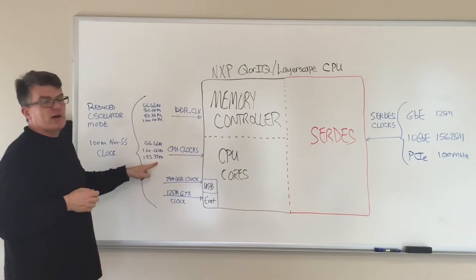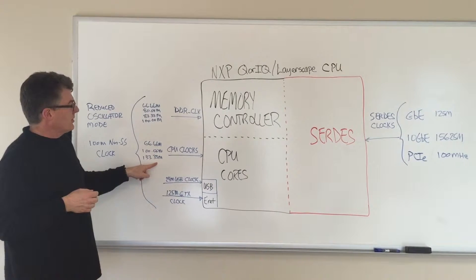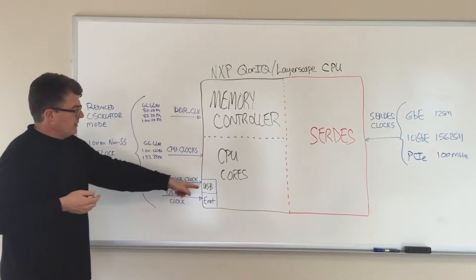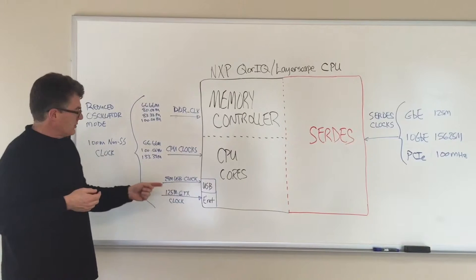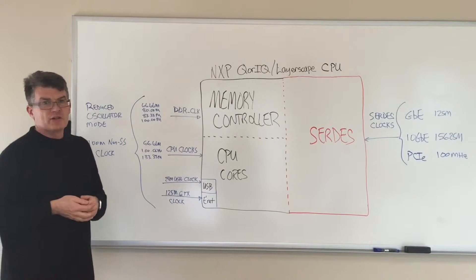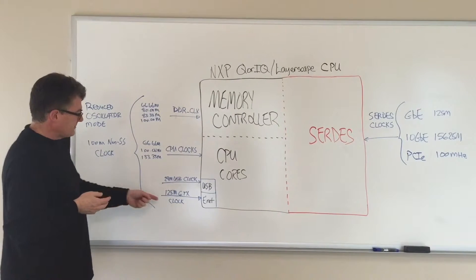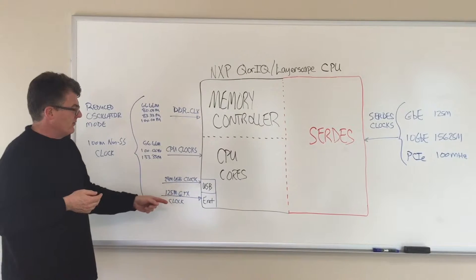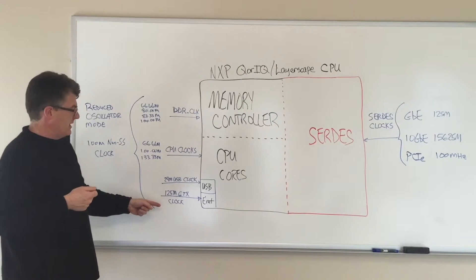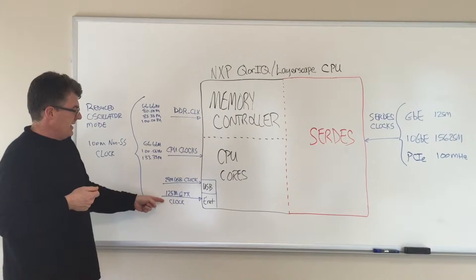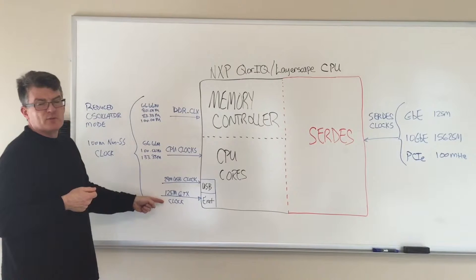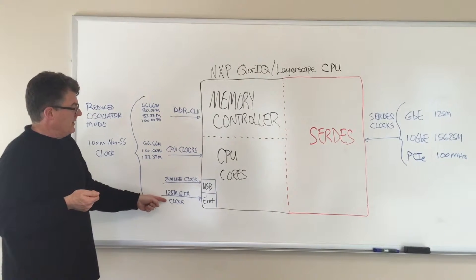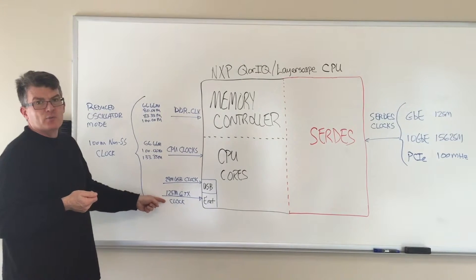Those are single-ended LVCMOS input clocks. Additionally, some of the CPUs have a USB interface which would require a 24 MHz single-ended clock. There's also an Ethernet interface built in — a one gigabit Ethernet interface that takes a 125 MHz single-ended clock as well, and that's at 2.5 volts.